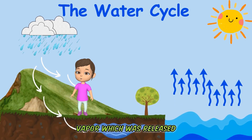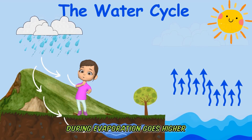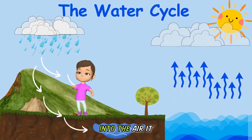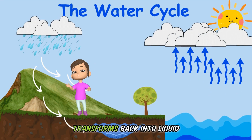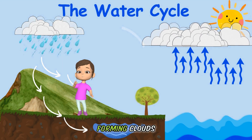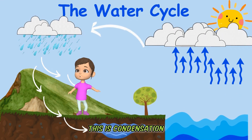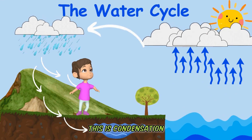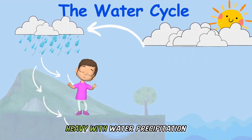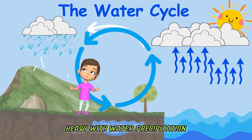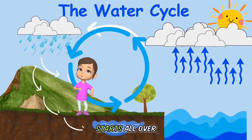Vapour which was released during evaporation goes higher into the air. It then cools down and transforms back into liquid, forming clouds. This is condensation. As the clouds become heavy with water, precipitation happens and the cycle starts all over again.